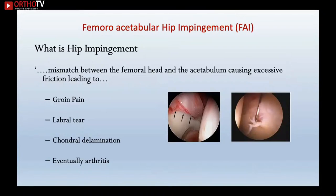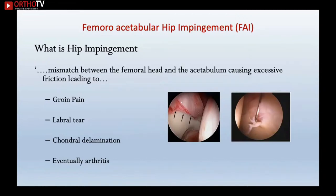The abnormal shape of the acetabulum causes excessive friction leading to labral tears and chondral delamination, which in turn gives you groin pain. The groin pain is mostly on the superolateral aspect of the acetabulum rather than the inner or medial groin. The damage from labral tears and chondral delamination causes early arthritis.